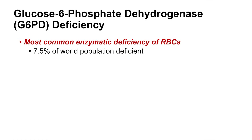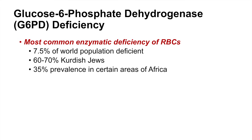About 7.5% of the world population is deficient in this enzyme, but it varies between different groups of individuals. For instance, about 60-70% of Kurdish Jews are deficient in glucose-6-phosphate dehydrogenase. And in some parts of Africa, the prevalence is up to about 35%. It is believed that deficiency in this enzyme may be protective against malaria.